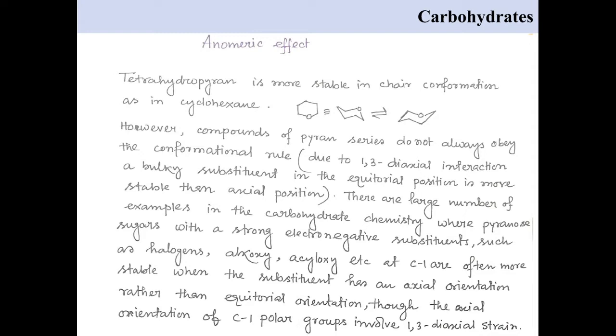There are large numbers of examples in carbohydrate chemistry where strong electronegative substituents at axial positions are preferred, such as halogens, alkoxy, acyloxy, etc. So, this effect is actually the anomeric effect.